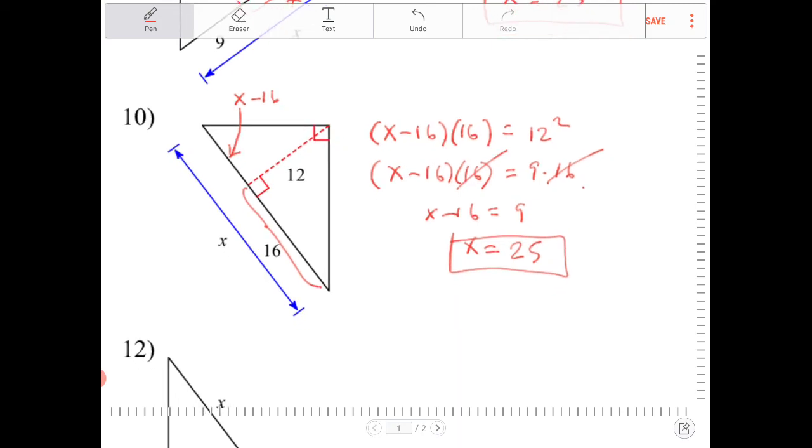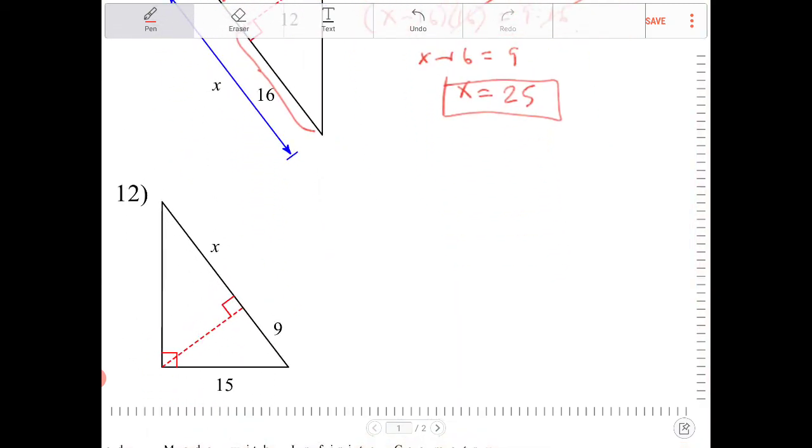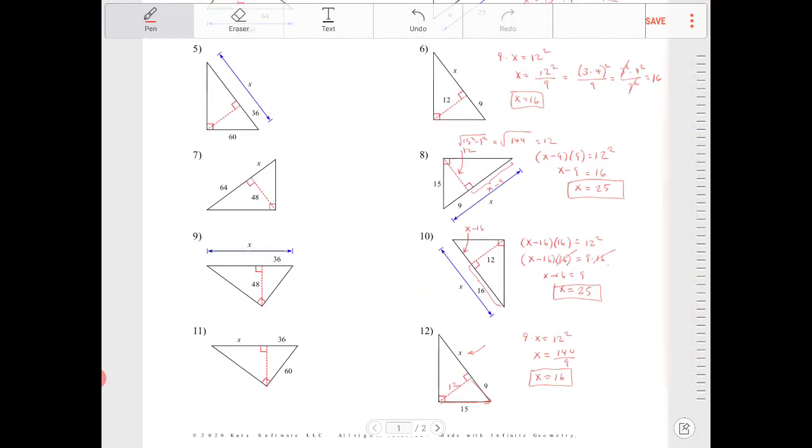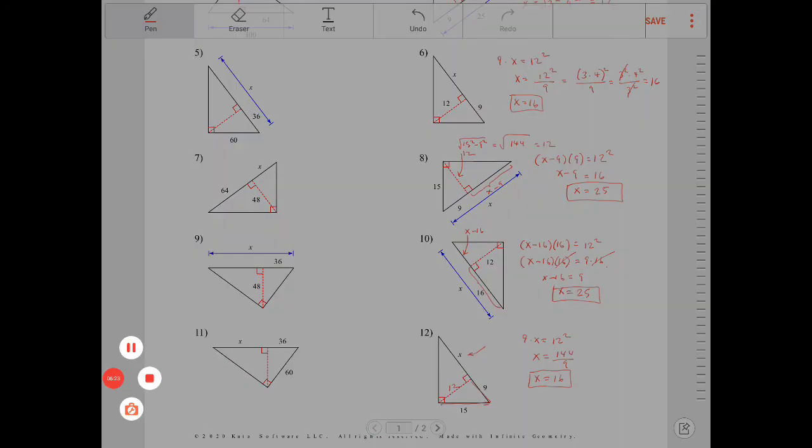Question number 12. So this side here is X. If this is 9 and this is 15, I know that this is again 12. So I can say 9 times X is equal to 12 squared. X is equal to 144 over 9, or X is equal to 16. And that's it.